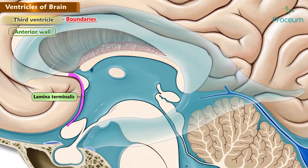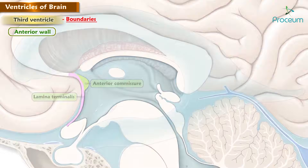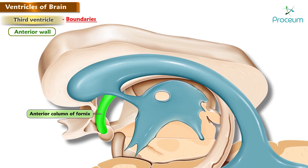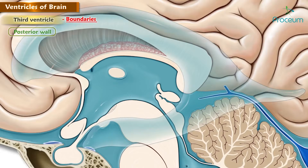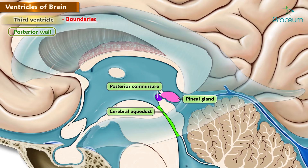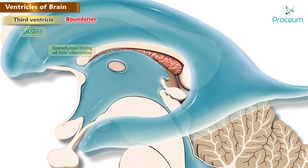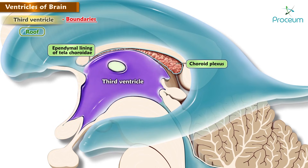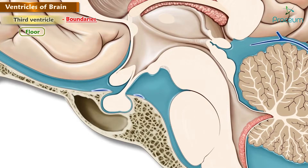Boundaries: the anterior wall is formed by the lamina terminalis, anterior commissure, and anterior column of the fornix. The posterior wall is formed by the pineal gland, posterior commissure, and the cerebral aqueduct. The roof is formed by the ependymal lining and the tela choroidea of the third ventricle, with the choroid plexus projecting downward from the roof.